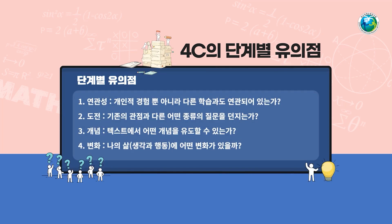이 기법의 유의점은 다음과 같습니다. 연관성 찾기 단계에서는 텍스트에서 자신의 경험을 찾을 수 있도록 합니다. 도전하기 단계에서는 기존의 자신의 관점과 다른 새로운 관점으로 질문을 할 수 있도록 유의해야 합니다. 또 개념 기록하기 단계에서는 학생들이 보다 상위의 개념을 찾을 수 있도록 하고, 변화 식별하기 단계에서는 자신의 삶에서 변화된 생각과 행동에 어떤 것이 있는지 이야기하도록 합니다.